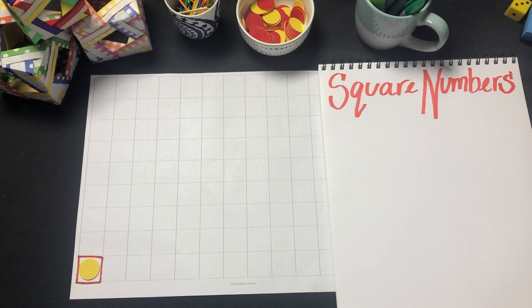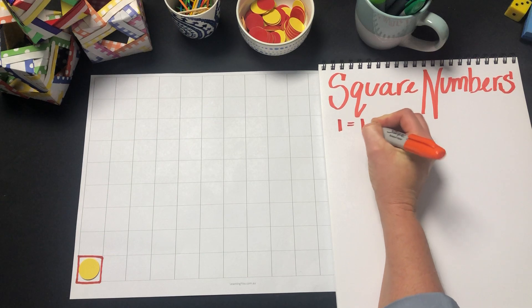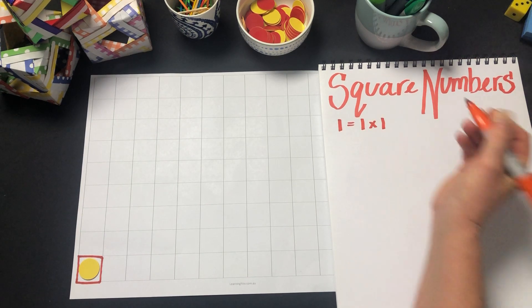So 1 is a square number and we can represent that as 1 equals 1 multiplied by 1.